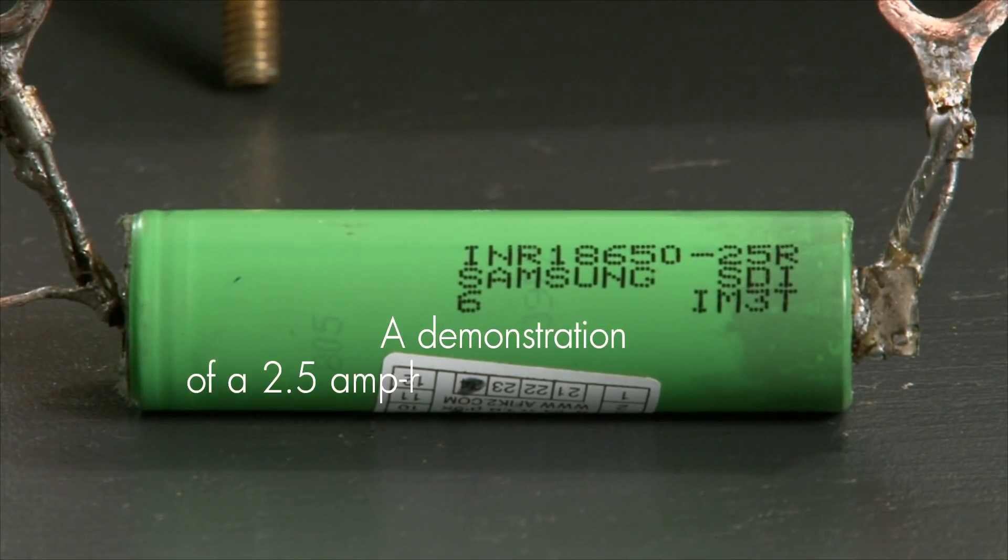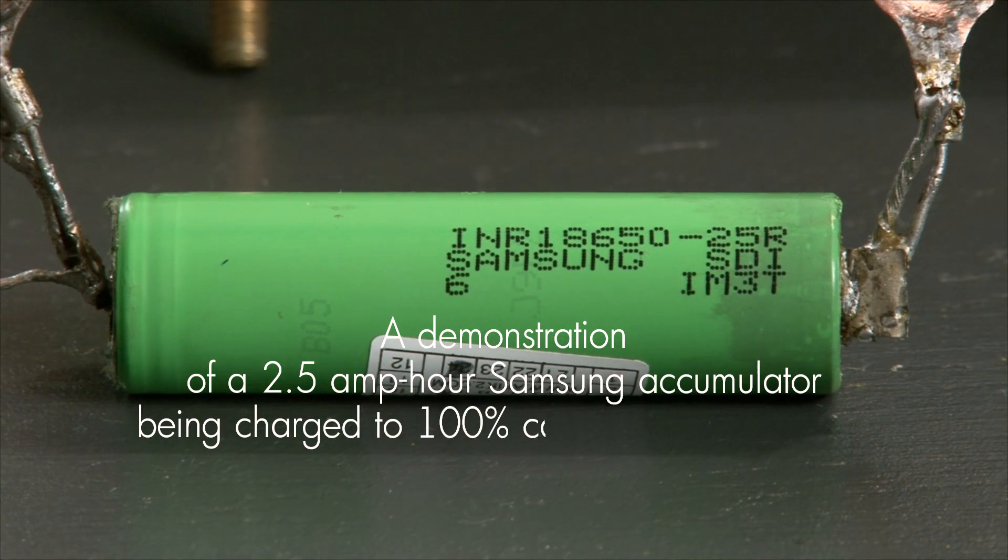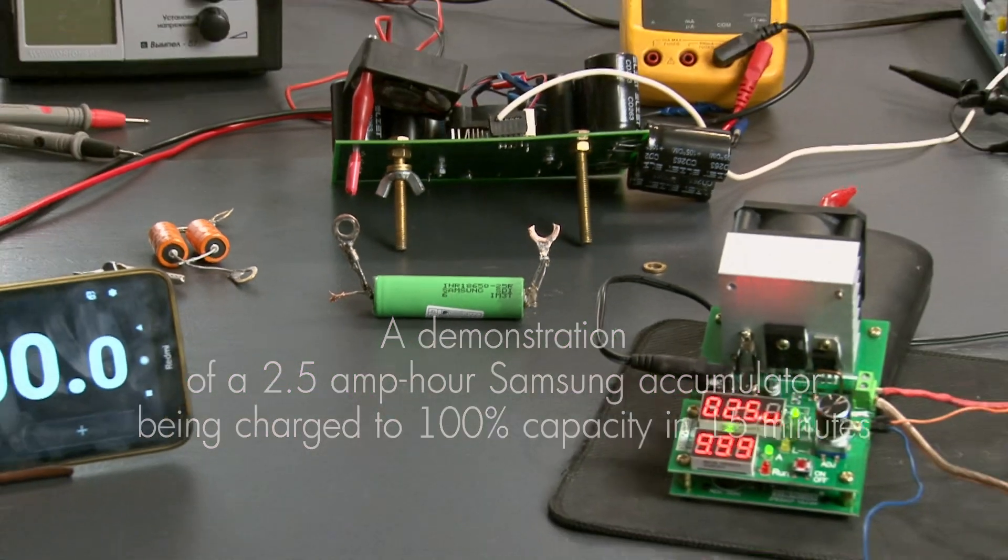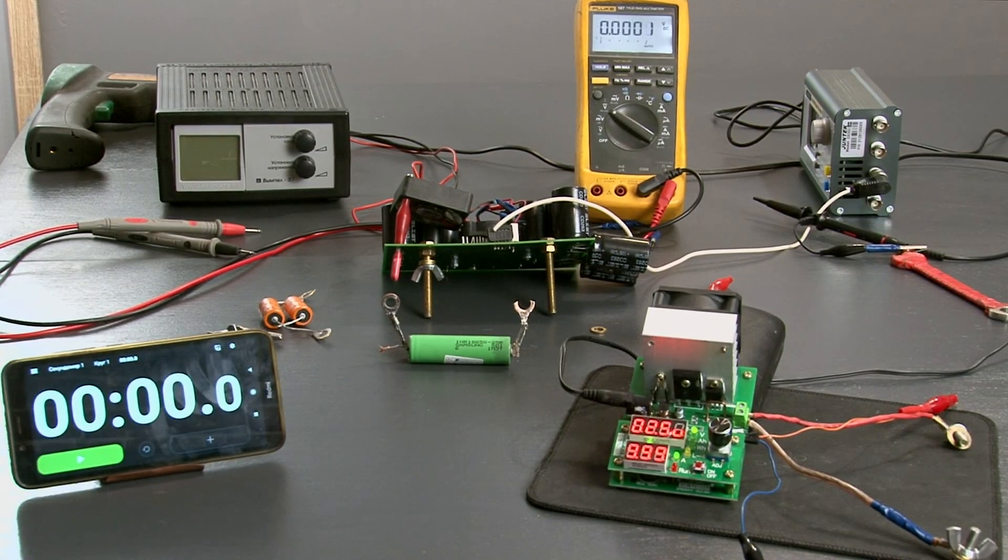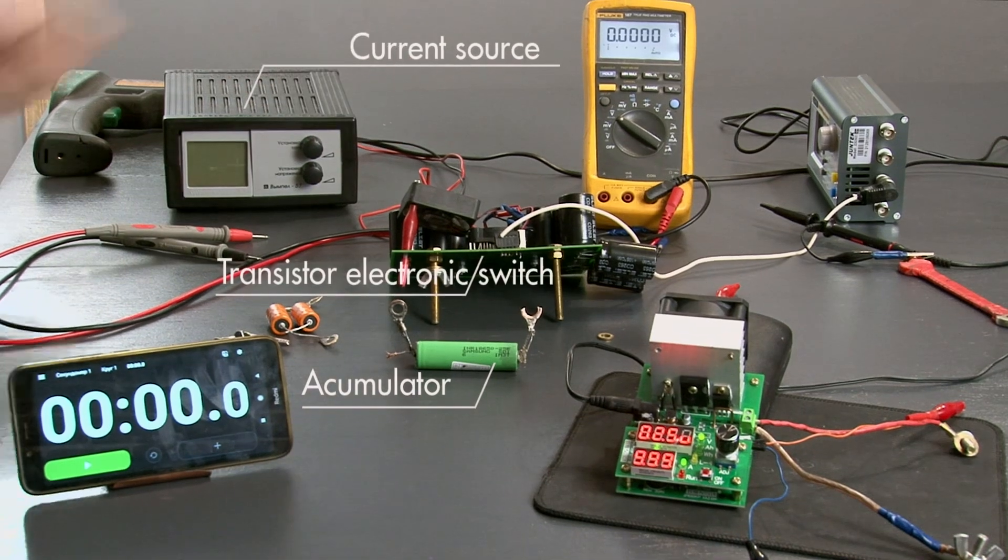A demonstration of a 2.5Ah Samsung accumulator being charged to 100% capacity in 15 minutes. On the table, an accumulator, a current source, a transistor electronic switch,